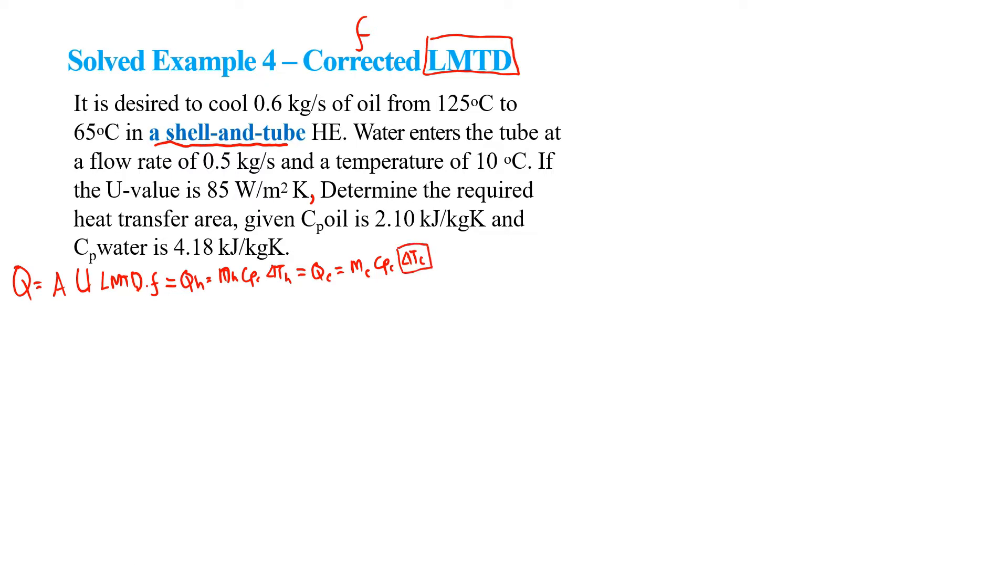If we know what is delta T cold, we will be able to find out the temperature of the cold fluid exiting from the shell-and-tube heat exchanger. We apply this equation, then we find that delta T cold equals 36.17, and we can then calculate the temperature of water out equal to 46.17.